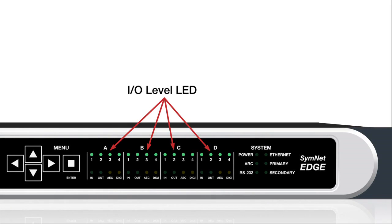The I/O level LED illuminates green to indicate signal present, amber to indicate -20 to 0 dBFS, and red to indicate clipping.